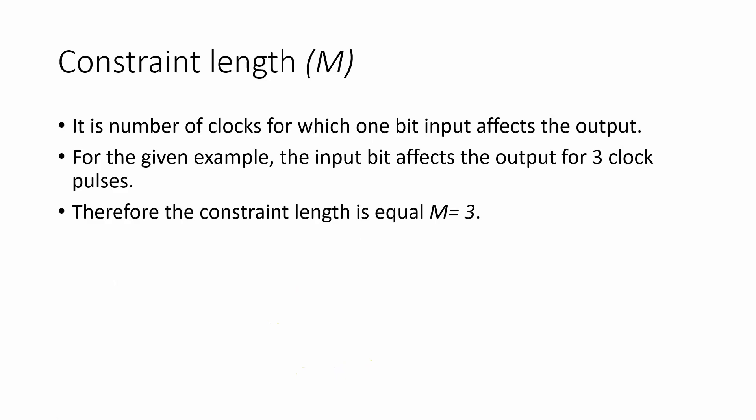Now let me explain what constraint length is. Constraint length, denoted capital M, is the number of clocks for which one input bit affects the output. For the given example, one bit at the input affects the output for 3 clock pulses. Therefore, the constraint length capital M is equal to 3.